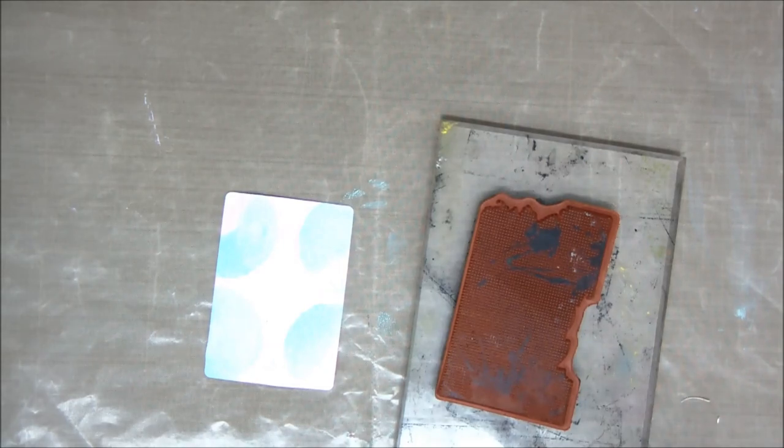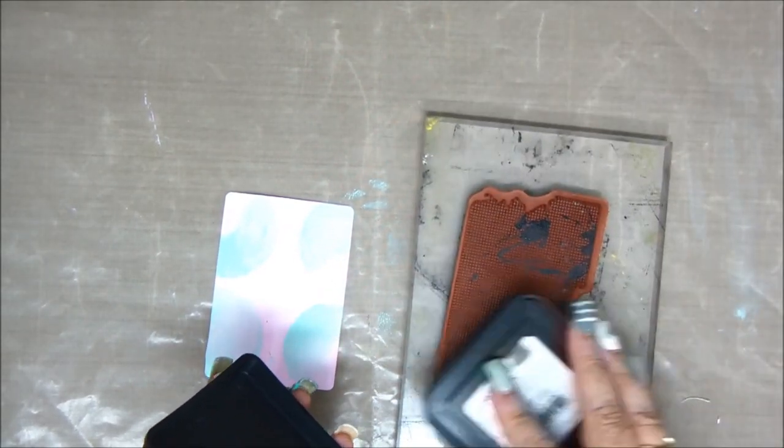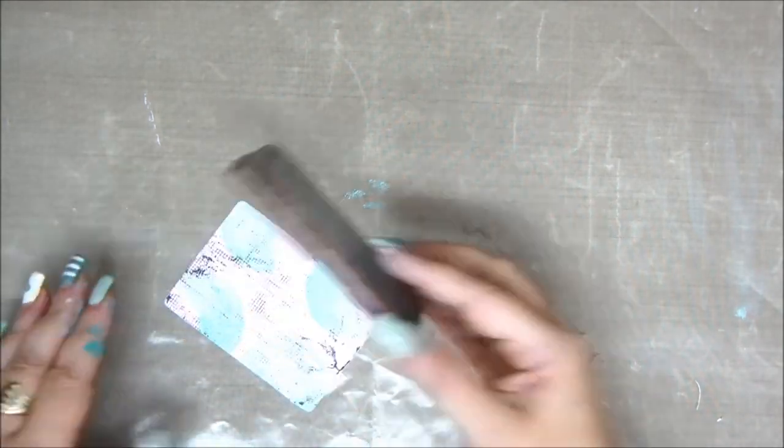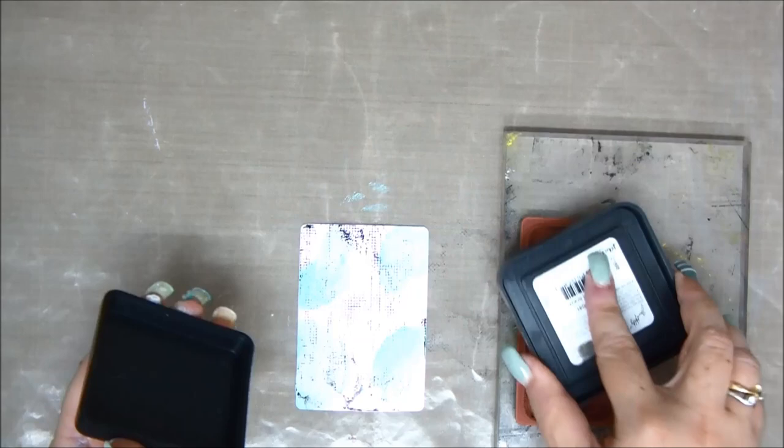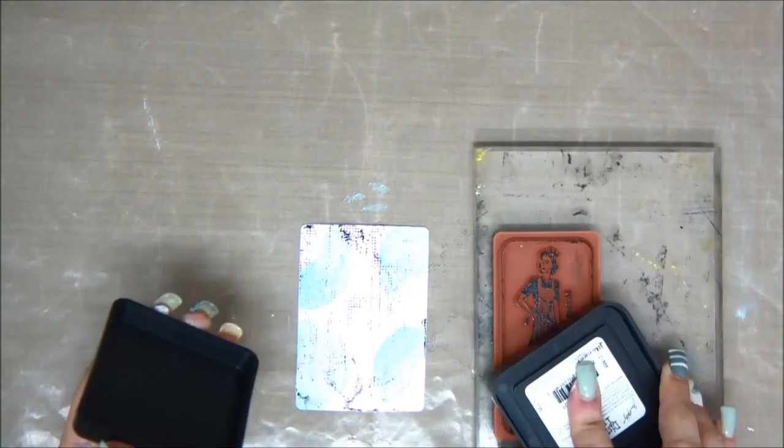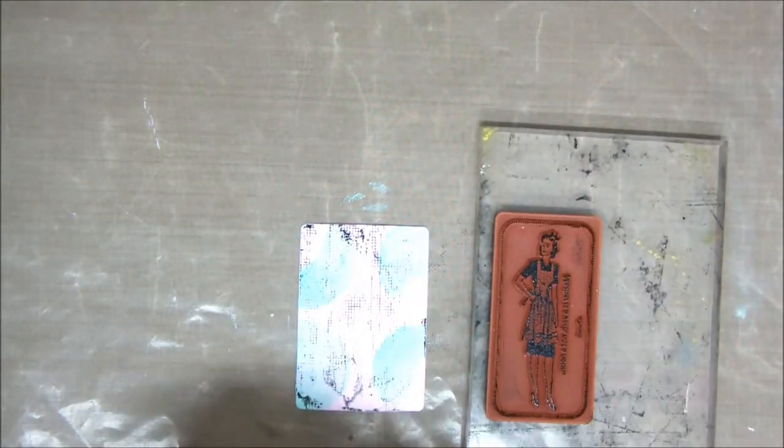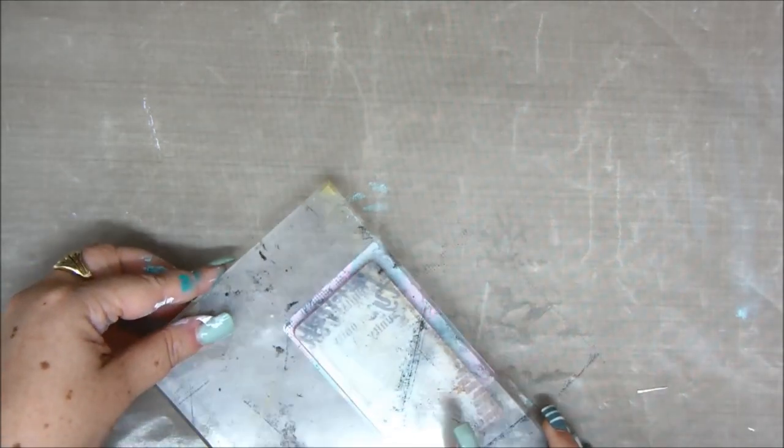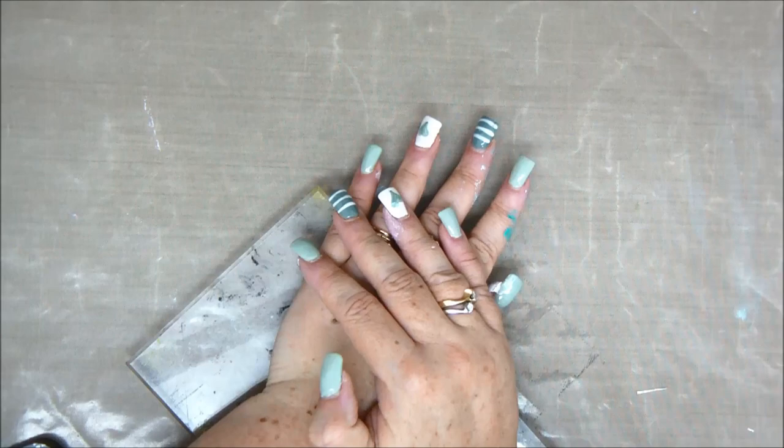Once it's completely dry, I'm going to stamp it with a background stamp, which is a grid pattern. Then on top of this stamp, I'm going to use this stamp of a woman. It's hard to see, but there's also a little quote that says mother is a verb not a noun. It's basically a stamp of a woman slash mother, and I'm going to stamp that on.